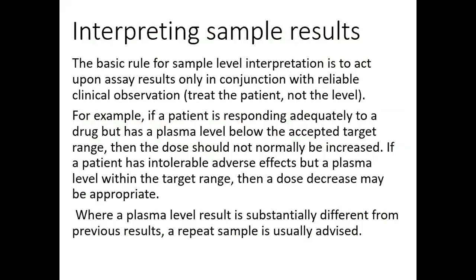Interpreting sample results. The basic rule for sample level interpretation is to act upon assay results only in conjunction with reliable clinical observation — treat the patient, not the level. For example, if a patient is responding adequately to a drug but has a plasma level below the accepted target range, the dose should not normally be increased. If a patient has intolerable adverse effects but a plasma level within the target range, a dose decrease may be appropriate. Where a plasma level result is substantially different from previous results, a repeat sample is usually advisable.